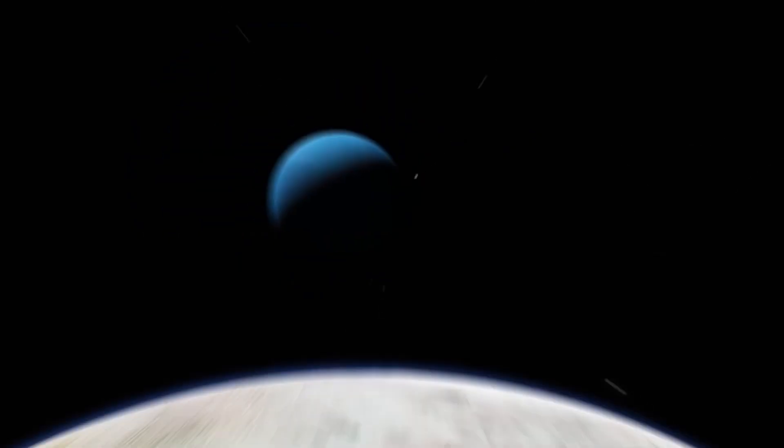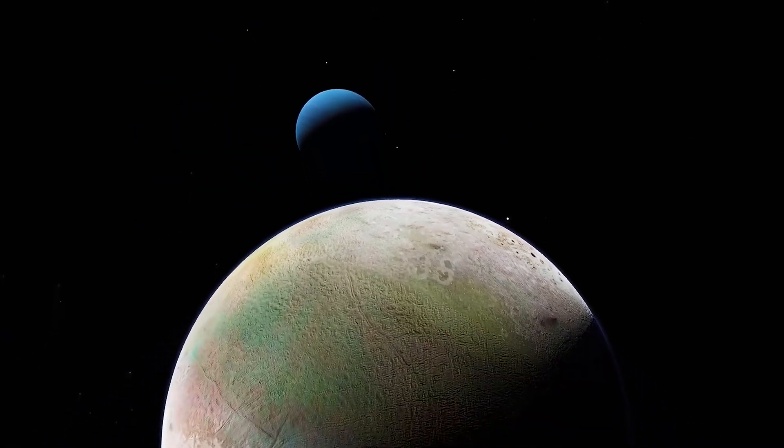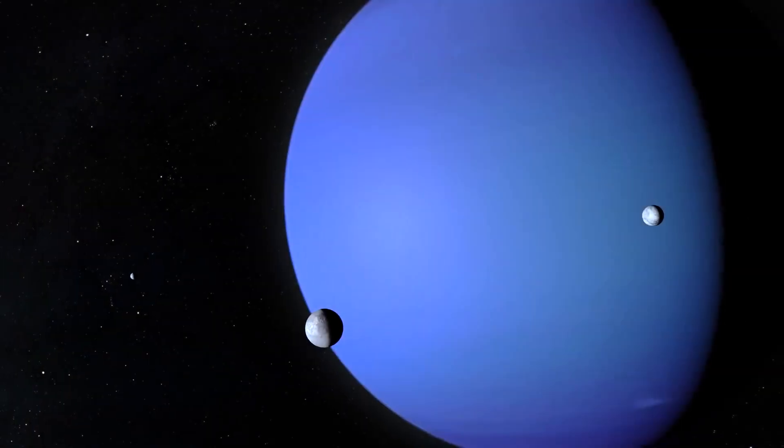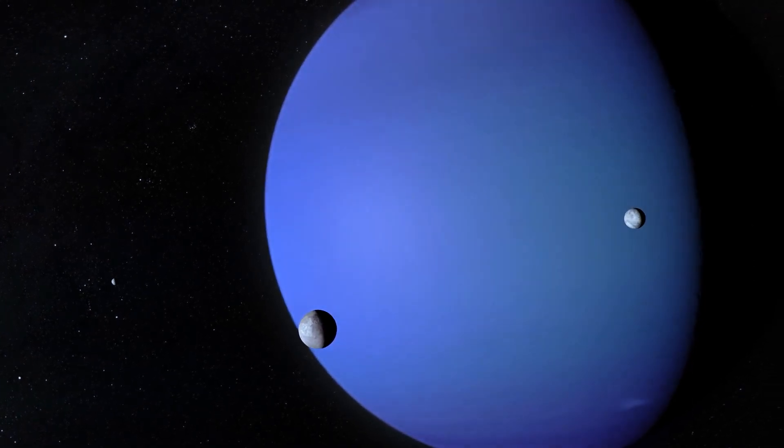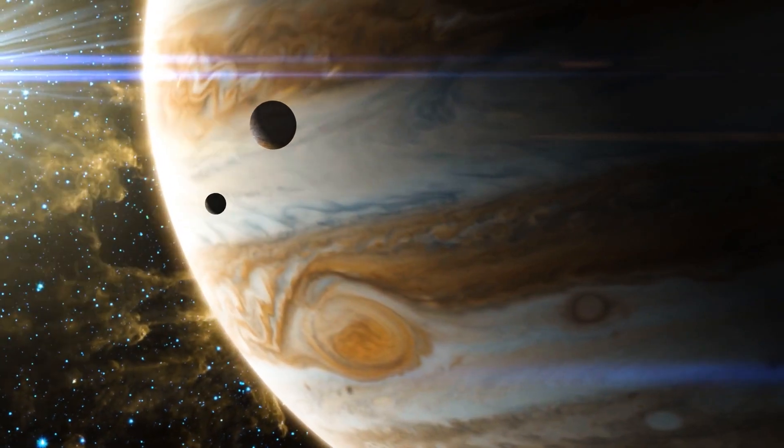Among these moons, Triton stands out as a unique celestial body, orbiting in the opposite direction to Neptune's rotation, setting it apart from other moons in the solar system.